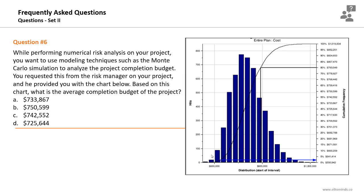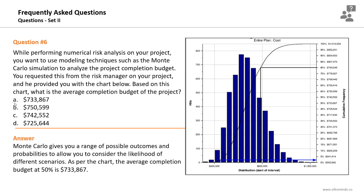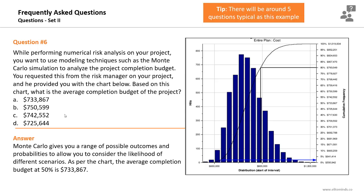This is a simple question that should not take more than 30 seconds in the exam. Whenever the question asks about the average completion budget or the average project duration, just look at the 50% probability — this is the average. At 50% probability, the average or expected budget will be $733,000 USD. Monte Carlo simulation gives a range of possible outcomes and probabilities to allow consideration of the likelihood of different scenarios.